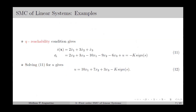The linear reachability condition gives S-dot equal to 2x₁-dot plus 3x₂-dot plus x₃-dot. We substitute for x₁-dot, x₂-dot, and x₃-dot, and equate with minus k times sign of S, then solve for u, which gives u as in equation number 12.